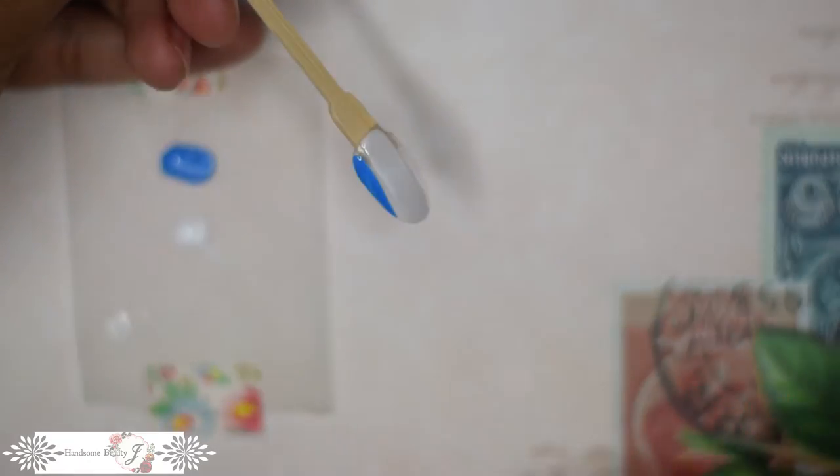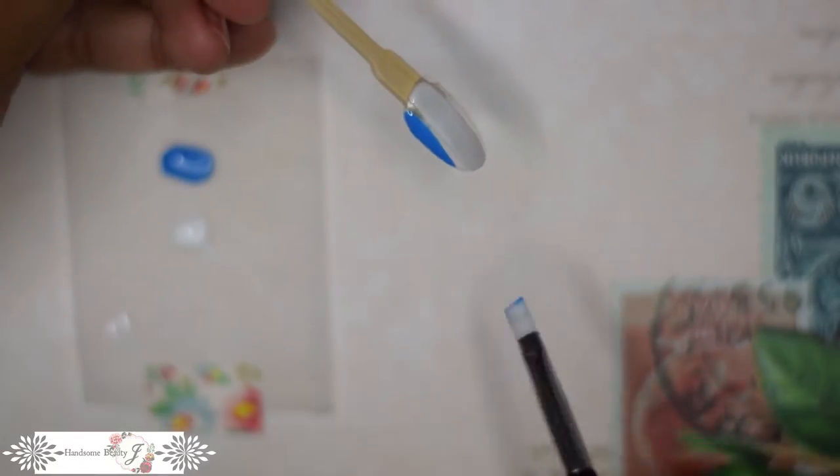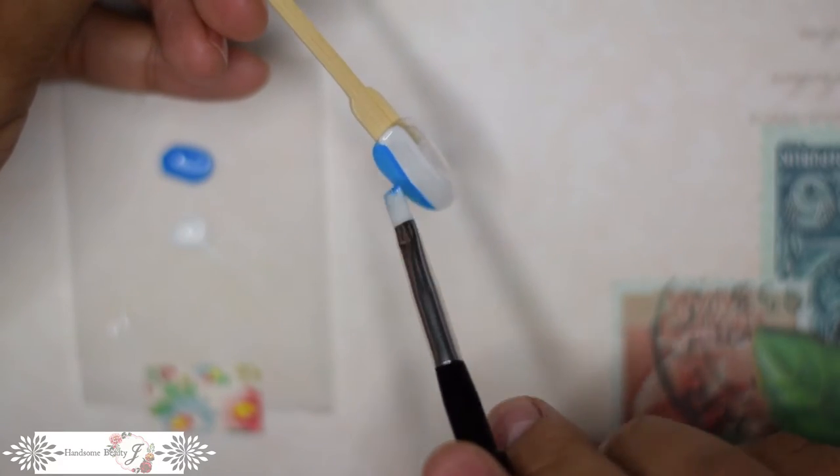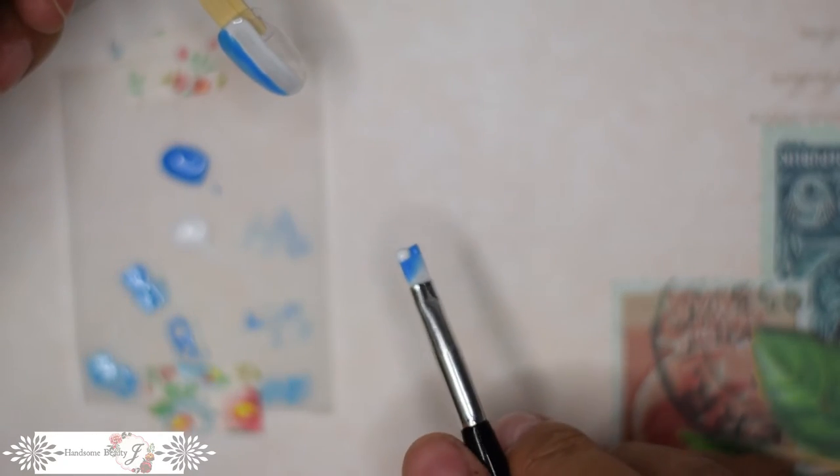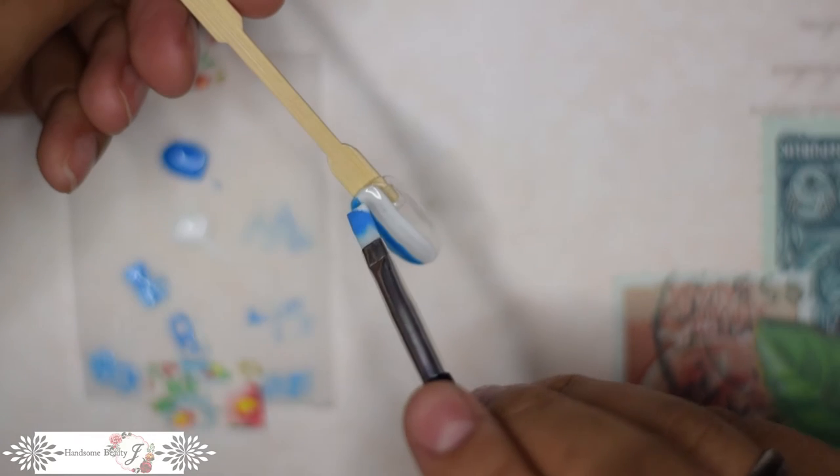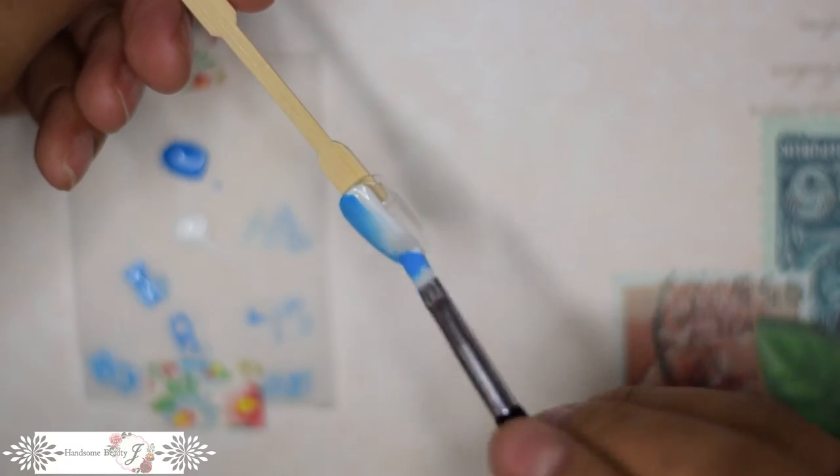Then put a little blue on one side. Clean off the brush a bit, and grab some blue on one half of the brush, and white on the other, like you see here. Doing these two colors together will help create a gradient on the nail.